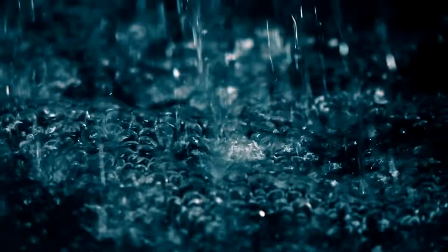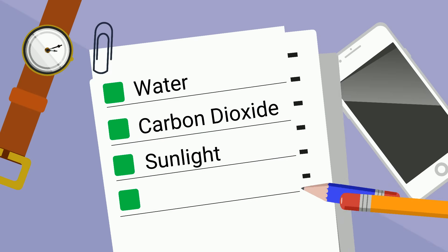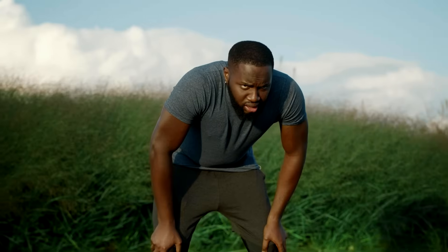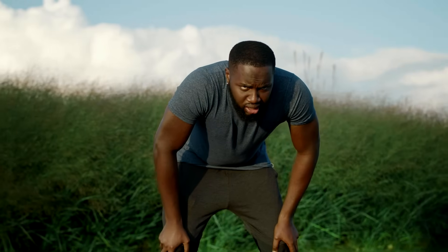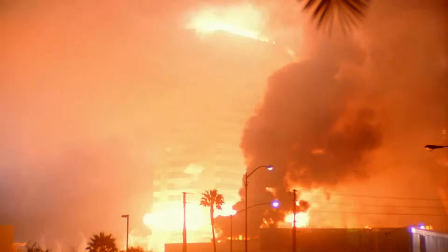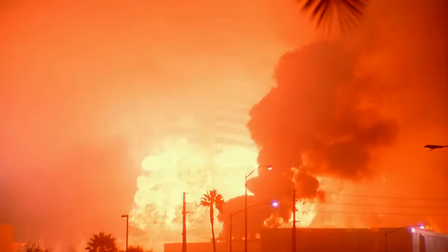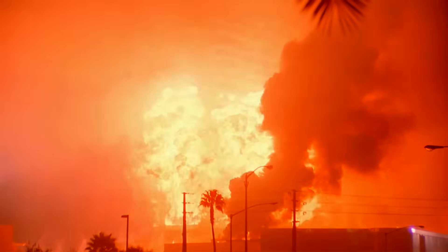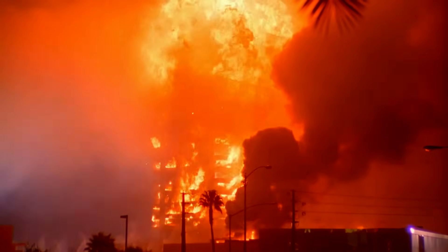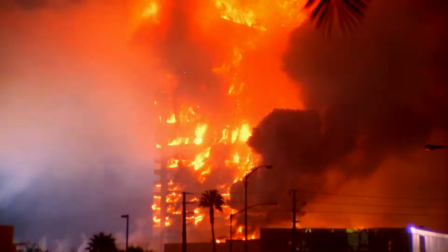The second is carbon dioxide, found in the atmosphere. In fact, we breathe out carbon dioxide, and it's also released into the atmosphere when we burn organic objects. And then last, sunlight.